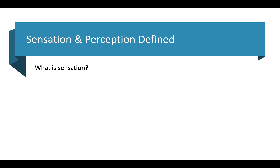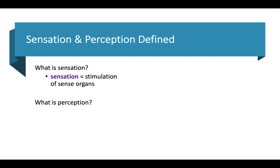So what is sensation? Sensation is stimulation of the sense organs. We have the five basic senses: sight, vision, touch, taste, and smell. All of the receptors that we have on our bodies to detect different types of stimuli — sensation is just the information we gather from those sensory organs.